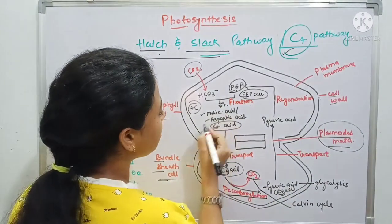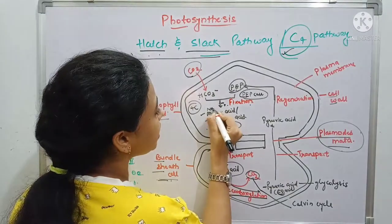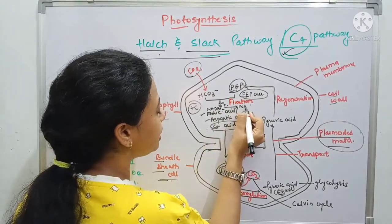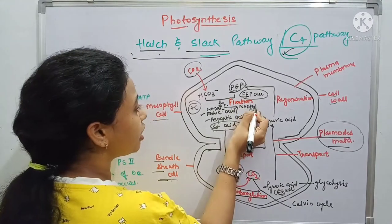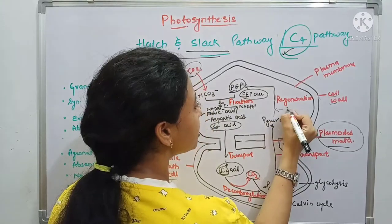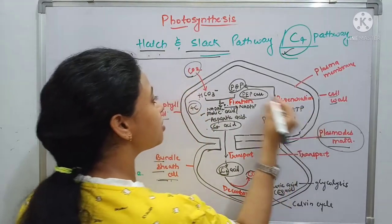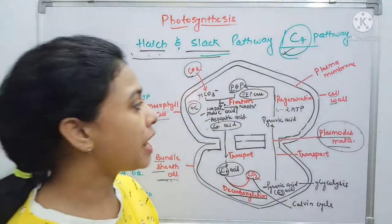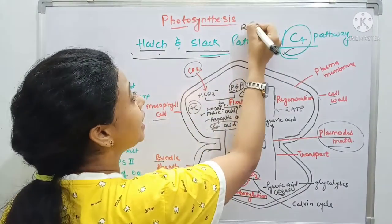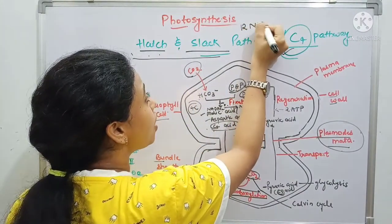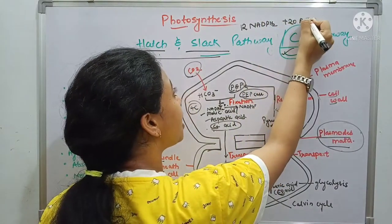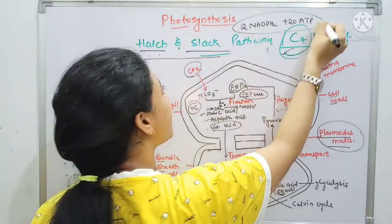During this fixation, one molecule of NADPH is being converted. And here also, two molecules of ATP are being used for regeneration of the phosphoenol pyruvate. So overall in this whole pathway, around 12 NADPH2 and 20 ATP are used.